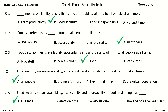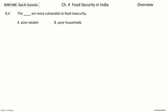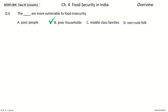Question 6: The Dash are more vulnerable to food insecurity. The options are Poor People, Poor Households, Middle Class Families, Non-Rural Folk. Your time to choose. And the answer is Poor Households. So, the Poor Households are more vulnerable to food insecurity.